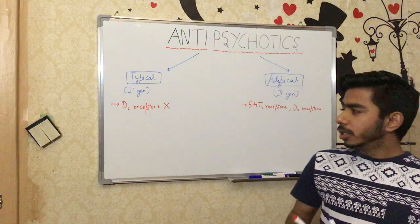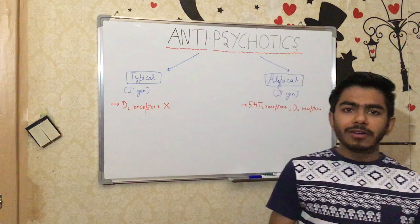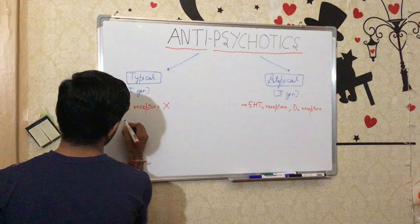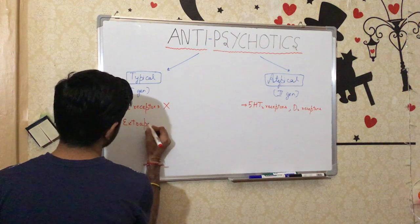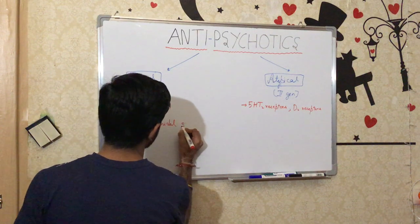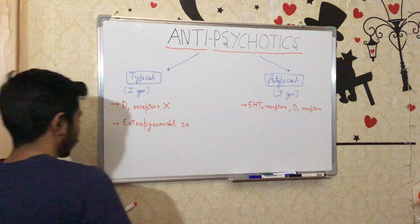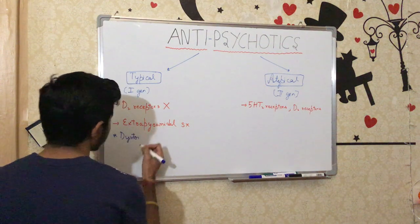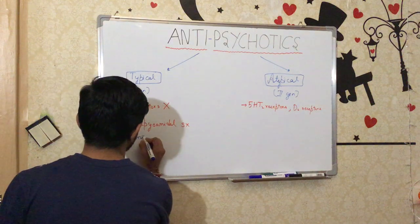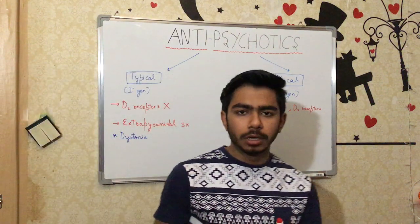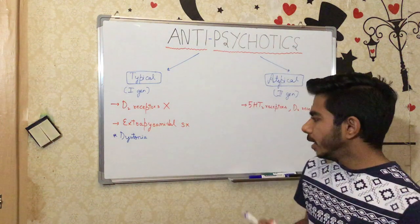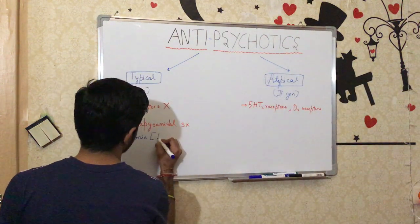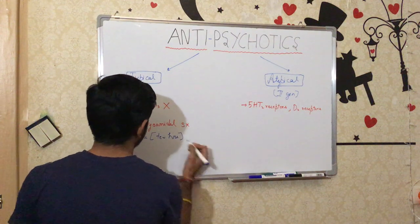Because typical antipsychotics bind to D2 dopamine receptors, they will cause more extrapyramidal symptoms. Let's talk about these extrapyramidal symptoms. When antipsychotic patients are using these drugs, they can suffer from dystonia — in cases of overdose, dystonia can appear within a few hours to a few days.